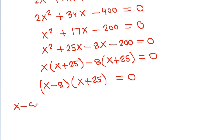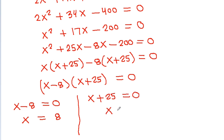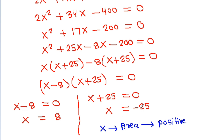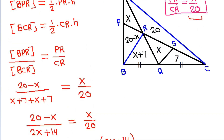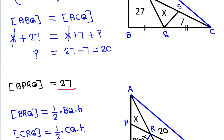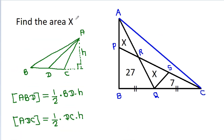So either X minus 8 equals 0, which means X is equal to 8, or X plus 25 equals 0, so X is equal to minus 25. And X is an area, so it should be positive. So X cannot be equal to minus 25. Therefore, X is 8.